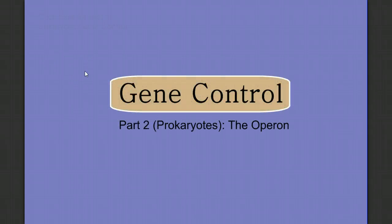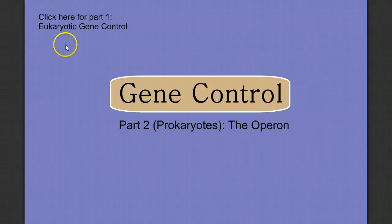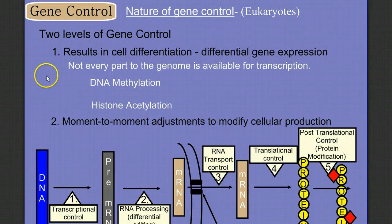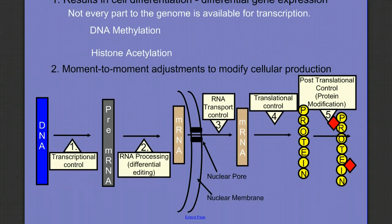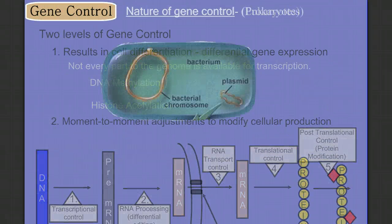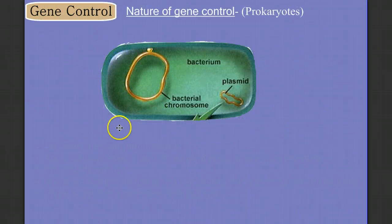Welcome back to part two of our discussion on gene control. In this part, we're going to look at the prokaryotes. If you didn't see part one, click on the link up here for the video on eukaryotic gene control. In that video, we talked about gene control in two levels: cell differentiation with the packing and unpacking of DNA, DNA methylation and histone acetylation, making parts of the genome available for transcription and other parts not.